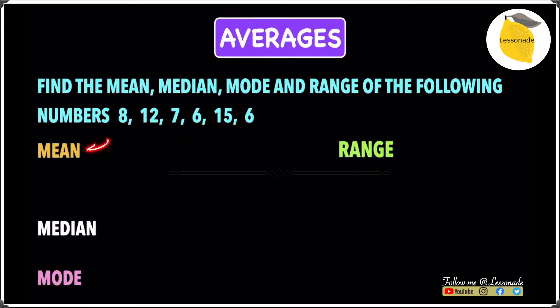So let's start by finding the mean first. The mean is actually nothing but what we call the average. The mean is just a fancy word for average. This question says we have to find the mean for 8, 12, 7, 6, 15, and 6. In other words, we have to find the average for these numbers. To find the average or the mean, you have to first add all of the numbers up.